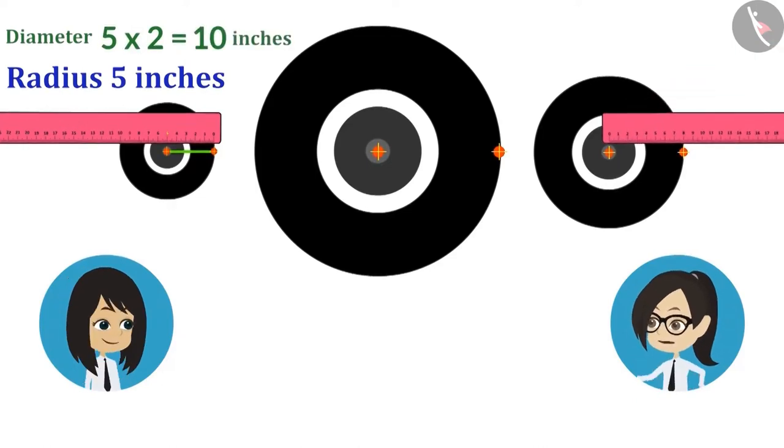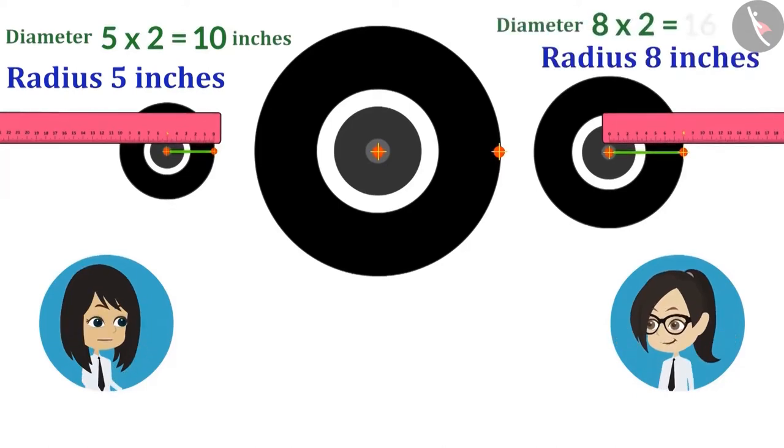Now look, the radius of the front wheel of the tractor is 8 inches. This means its diameter is 16 inches.